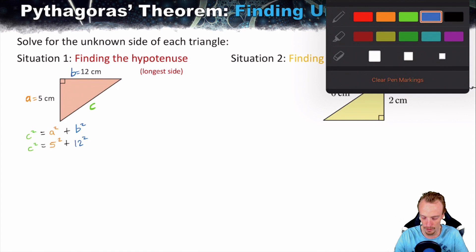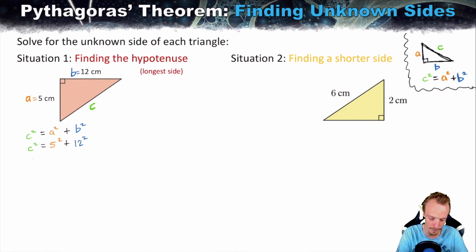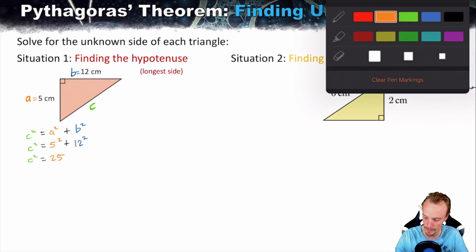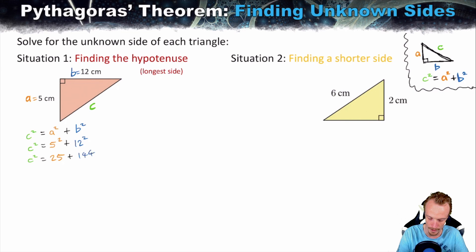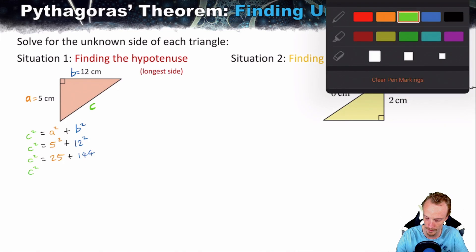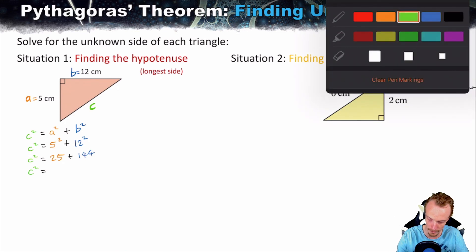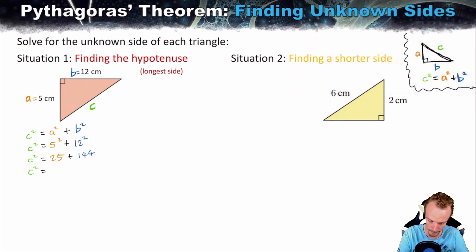The next step is to evaluate the right-hand side to simplify as we go. 5 squared is 25, added to 12 squared which is 144. Adding them together, C squared is going to equal 169.